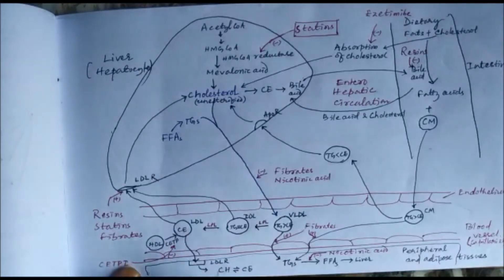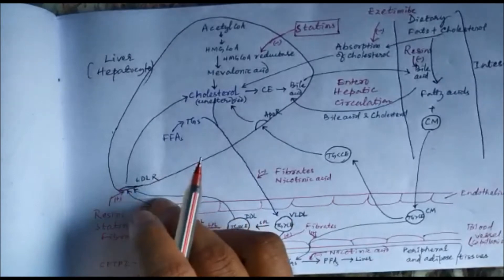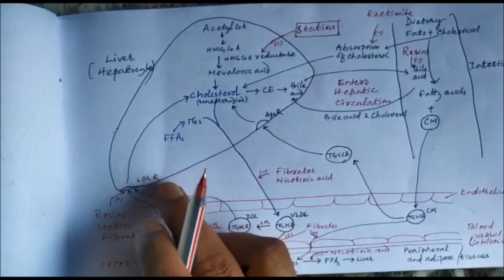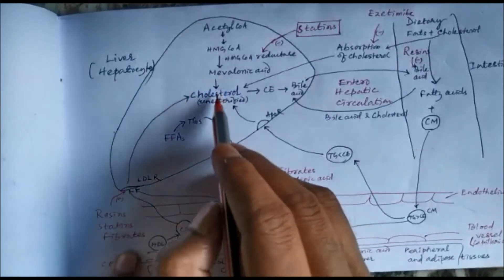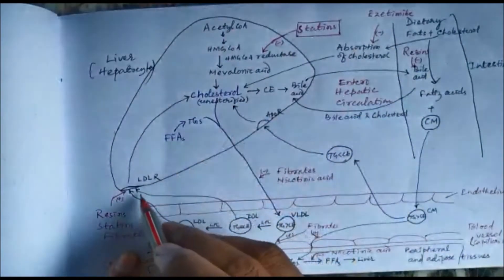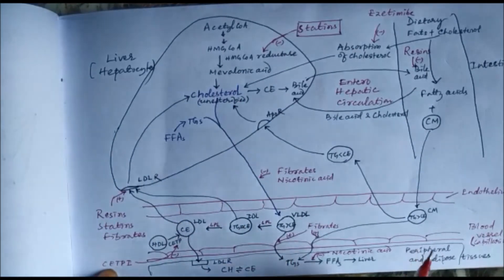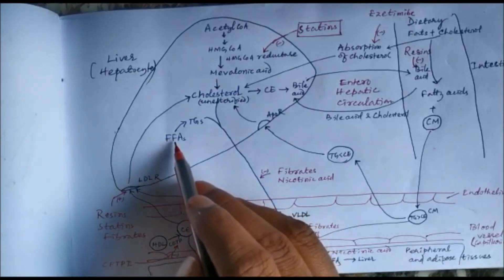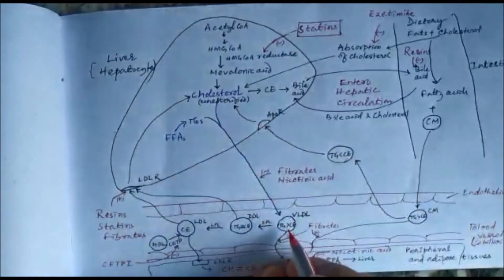Triglycerides are released, and for LDL there is an LDL receptor on the hepatocytes which uptakes the LDL — that is another source of cholesterol. Cholesterol sources: number 1 is synthesis, number 2 is from the diet, and number 3 is uptake of LDL through LDL receptors into the hepatocytes. These triglycerides, after being taken into peripheral tissues and adipose tissue, are converted to free fatty acids, which are taken by the liver to form triglycerides, and with cholesterol they form and secrete VLDL.